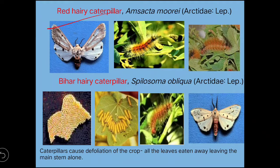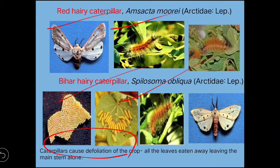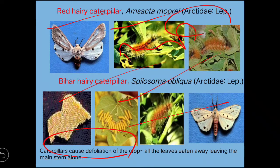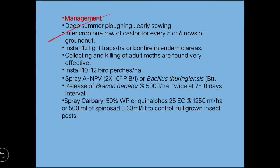Next, we'll see the red hairy caterpillar and Bihar hairy caterpillar. These two are defoliators. The scientific name of red hairy caterpillar is Amsacta moorei, and Bihar hairy caterpillar is Spilosoma obliqua; they belong to the family Arctiidae. If a question asks about groundnut defoliation, you should name both of these caterpillars.